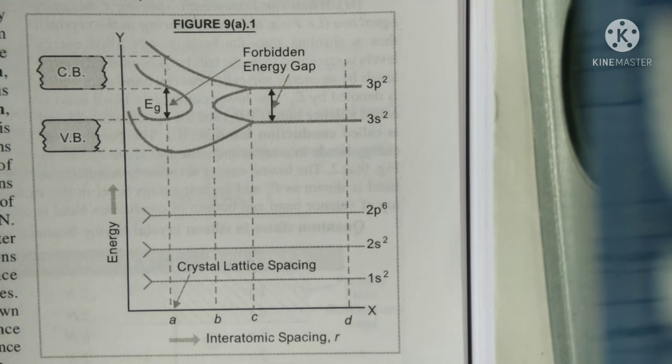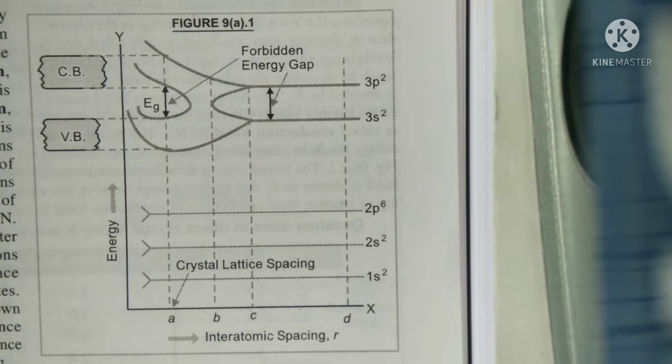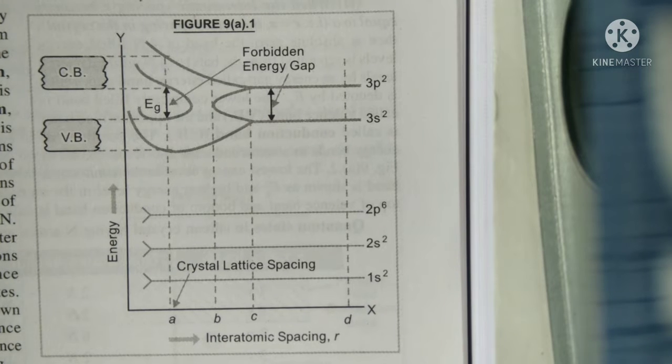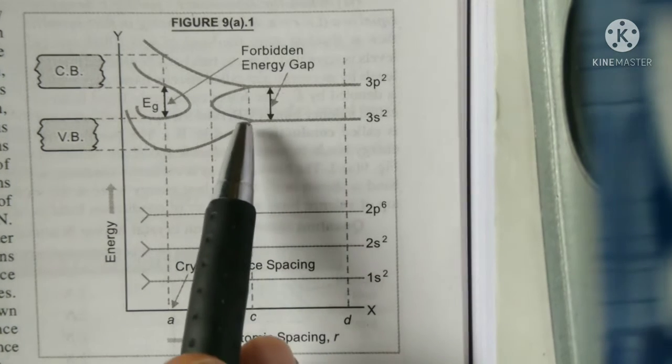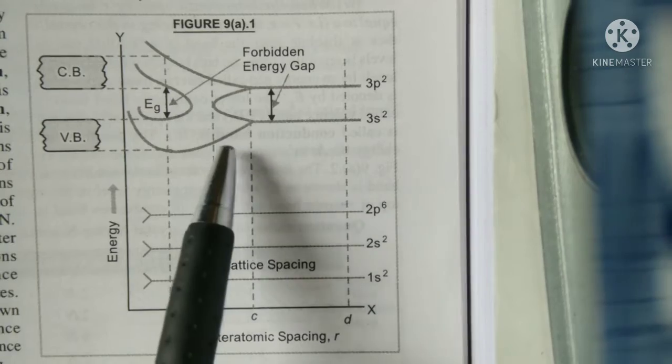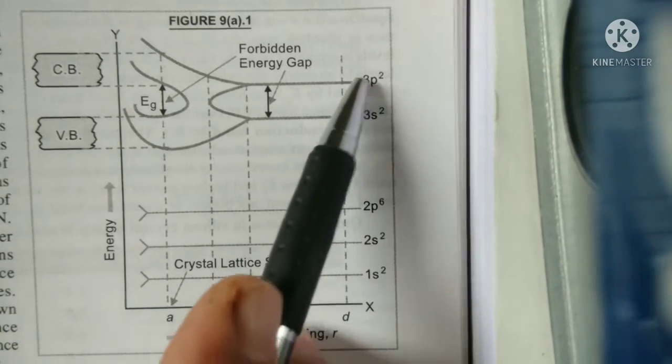If R is less than D, but greater than C, then there is no visible splitting of energy levels. Again, when R is equal to C, then the energy of electrons corresponds to 3s and 3p levels starts changing. When R is equal to C, then the energy of the 3s and 3p levels is the same.